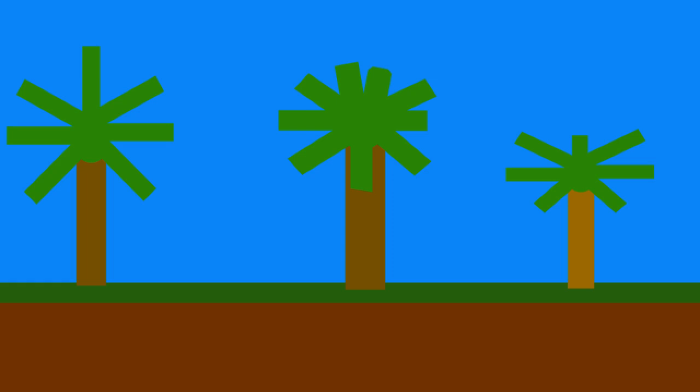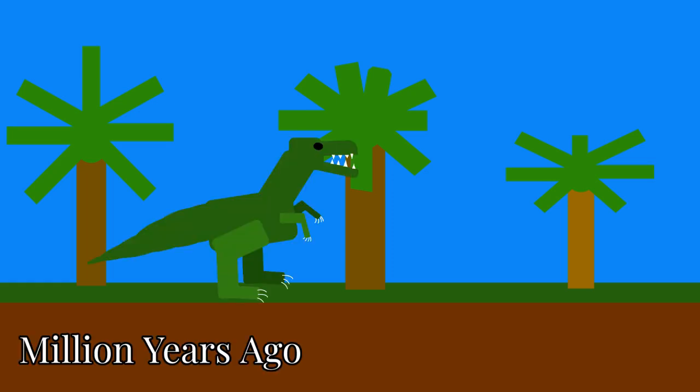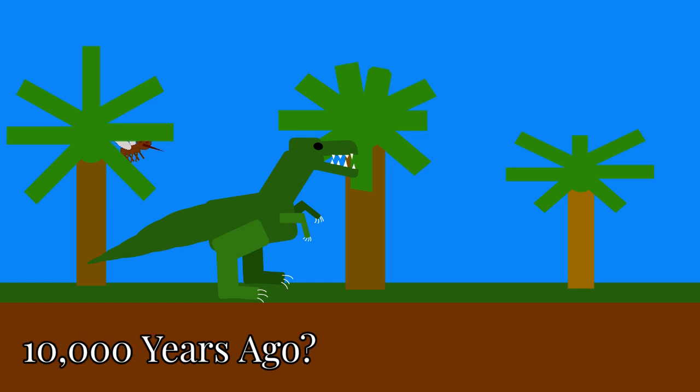Ever since you were a kid, you were told that dinosaurs roamed the Earth millions of years ago. But how do scientists know this? How do we know that dinosaurs didn't exist 10,000 years ago?